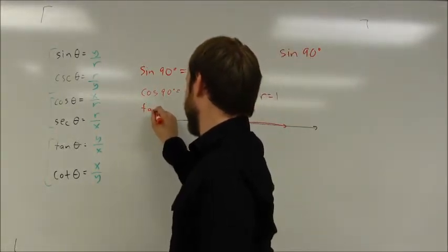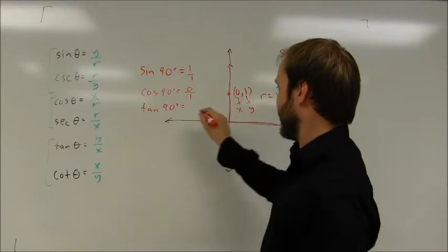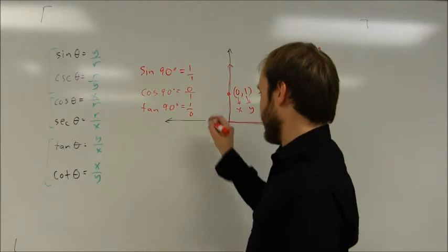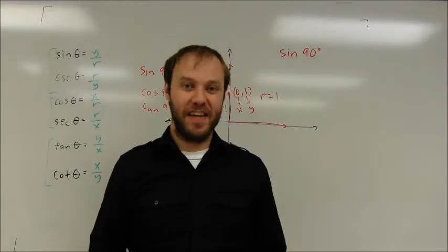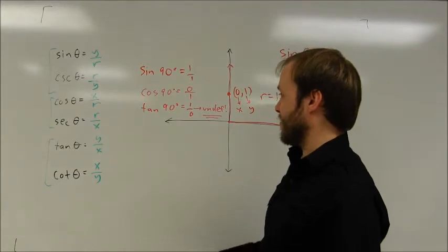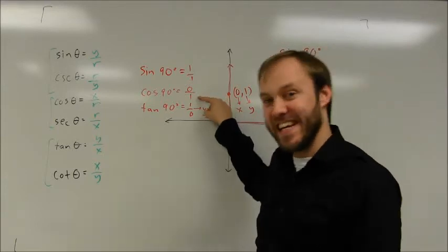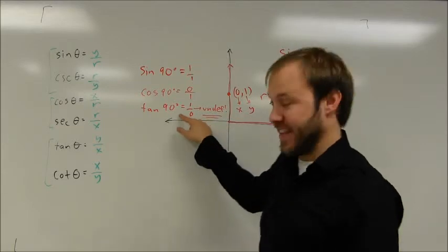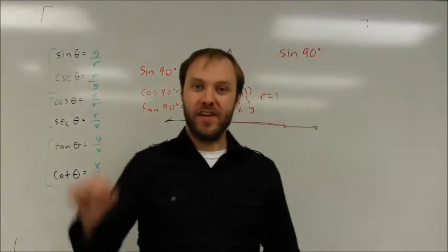I want to find the tangent of 90 degrees. Again, we can use the definitions, y over x. Interestingly, that gives me one over zero. If you remember, you can't divide by zero. So that one is actually going to be undefined. There is no tangent of 90. And again, you can take the reciprocals here. And you can find the cosecant and the secant and the cotangent as well. A cosecant of 90 will still be one. Interestingly, the secant of 90 will also be undefined because you get a zero here. And interestingly, the tangent is undefined. But if you take the reciprocal, you're going to get a cotangent value of zero.